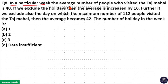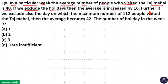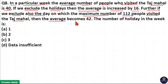In a particular week, the average number of people who visited the Taj Mahal is 40. If we exclude the holidays, then the average is increased by 16. Further, if we also exclude the day on which the maximum number of 112 people visited the Taj Mahal, then the average becomes 42. The number of holidays in a week is to be found.